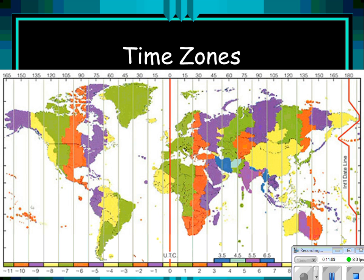Here is a picture of the different time zones. Look at the United States — the contiguous United States has four time zones, not including Alaska and Hawaii. Interestingly, we're on the same time zone as the western side of South America; all of that purple shading is on the same eastern time as we are.